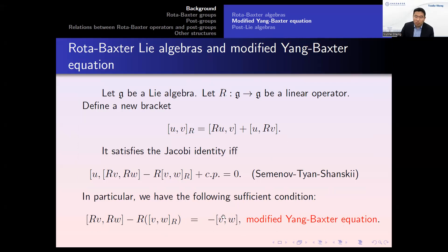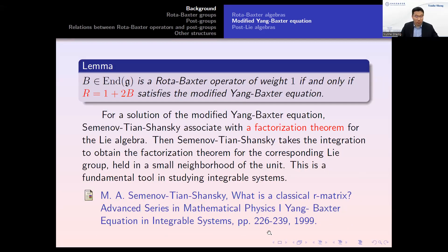One can see that the modified Yang-Baxter equation is similar in form to the Rota-Baxter operator, but not the same — in one case the term is inside the bracket, in the other it is outside. One naturally expects some relation between these two equations. Indeed, the following lemma establishes the relation: B is a Rota-Baxter operator of weight one if and only if R, defined by identity plus two times B, satisfies the modified Yang-Baxter equation.